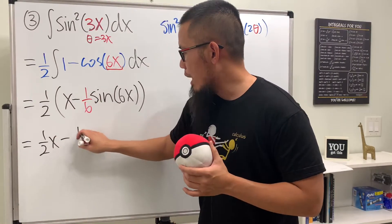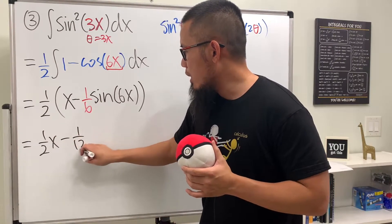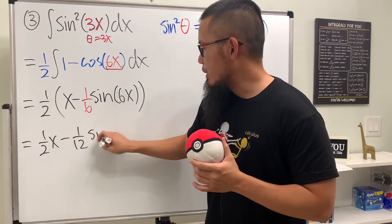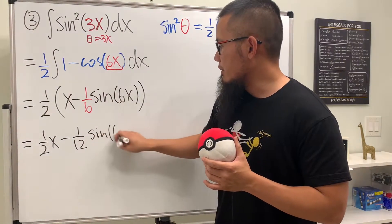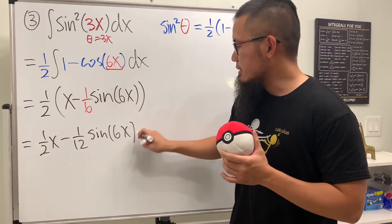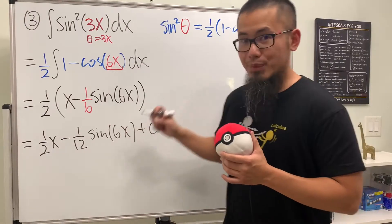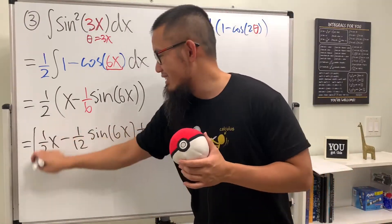Multiplying in the one half, all together we have one half x minus one twelfth sine of 6x, plus c. That's it for number three.